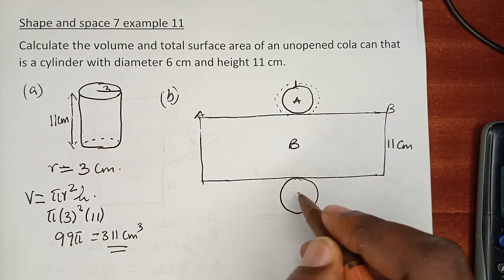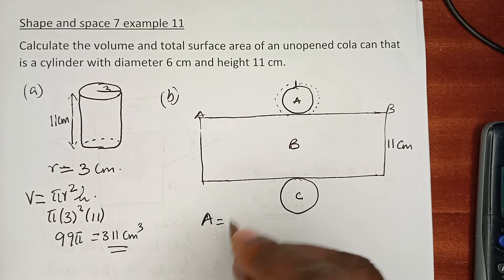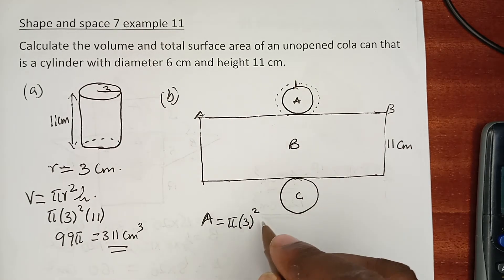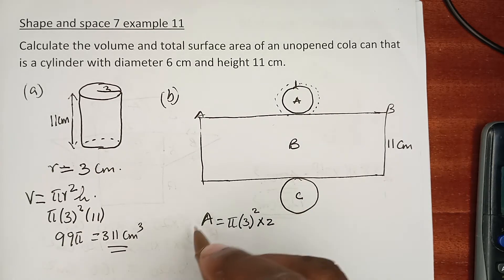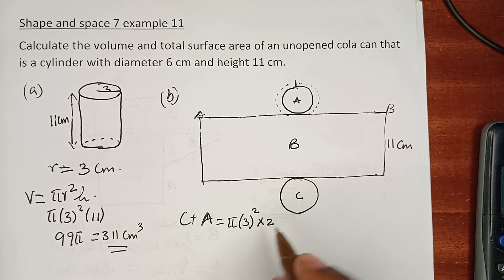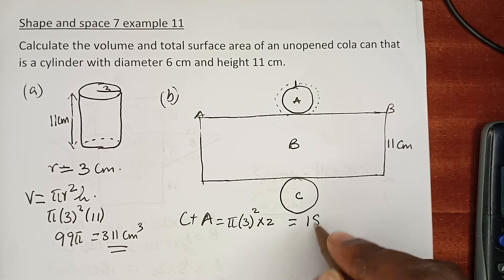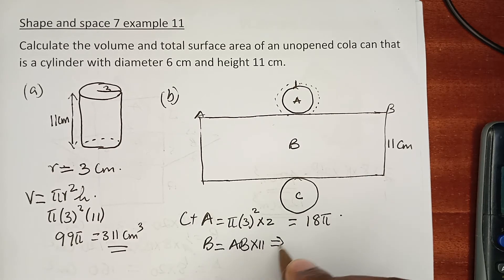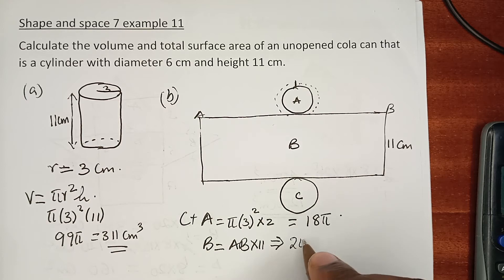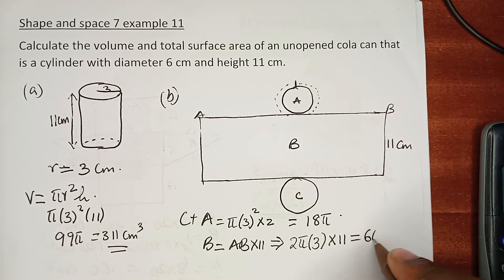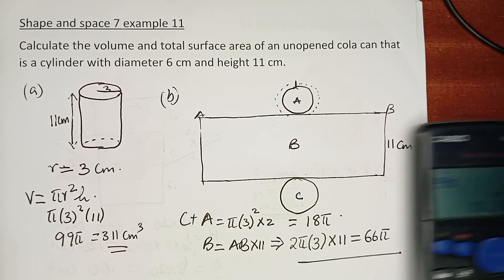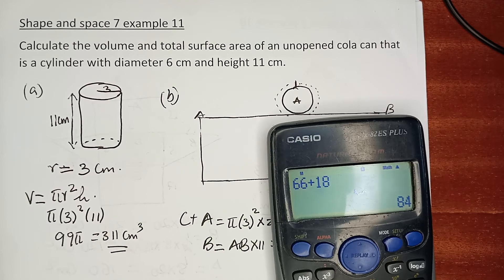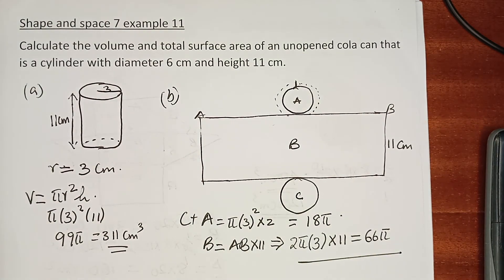The total surface area has components A, B, and C. The area of the two circular faces is 2 × πr² = 2 × π × 9 = 18π. The area of the rectangular face B is AB × 11, where AB is the circumference 2πr, giving 2π × 3 × 11 = 66π. Adding them: 18π + 66π = 84π.